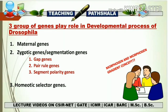There are three groups of genes that play a very important role in the developmental process of Drosophila. The first is maternal genes, which are expressed in the mother's ovary before formation of the zygote. The second category is zygotic genes, also known as segmentation genes, with subcategories: gap genes, pair-rule genes, and segment polarity genes — expressed after fertilization. The third category is homeotic selector genes, which give identity to each segment.